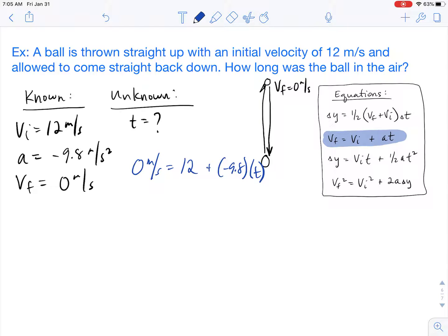A lot of students make mistake here. And if they try to combine unlike terms, they try to combine this 12 with this negative 9.8 times T. Just make sure you're avoiding doing that. This 12 does not have a T attached to it, so you can't add it to the negative 9.8. So our only first step here is to subtract 12. So negative 12 is going to equal negative 9.8 times T. We'll get T all by itself by dividing by negative 9.8. We end up with an answer of 1.22 seconds.